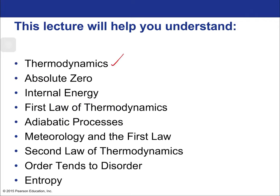So what are thermodynamics? We'll talk about absolute zero, which is the purpose of the Kelvin scale of temperature. We'll talk about the idea of internal energy, and how that allows us to define the first law of thermodynamics, since we already know about heat. Then what is an adiabatic process, which has to do with the concept called entropy. Then we'll get to a connection between the first law and meteorology, and finally move on to the second law of thermodynamics. We'll talk about disorder and how things that are ordered tend to become disordered — and how that is in fact entropy.